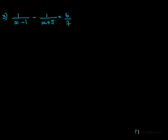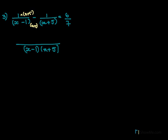The next problem has fractions, so first we need to take LCM. The LCM will be (x minus 1)(x plus 5). In the first fraction, what is missing is (x plus 5), so we multiply by (x plus 5). In the second fraction, we multiply by (x minus 1). This gives 1 times (x plus 5) minus 1 times (x minus 1) equal to 6 by 7.